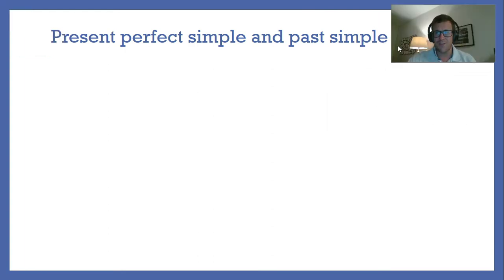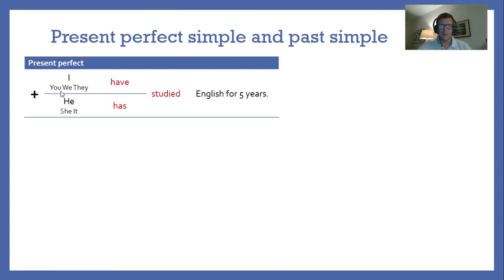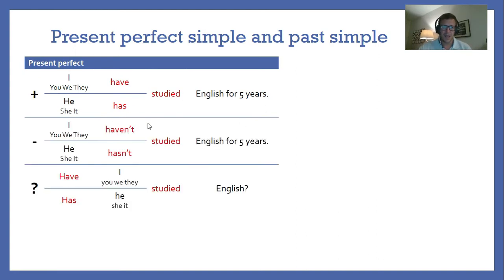Let's look at the form of these tenses — present perfect first. For 'I' we say: I have studied English for five years. For 'he', 'she', or 'it' we say: he has studied English. In the negative: I haven't studied or he hasn't studied English for five years. For the question we put 'have' at the start: Have I studied English? Has he studied English? Remember: present perfect uses 'have'.